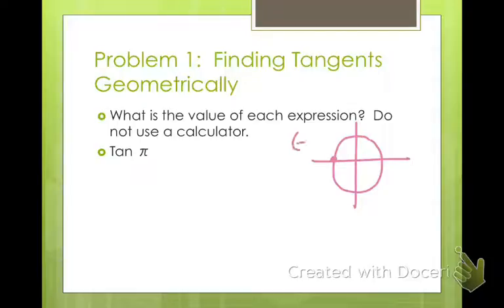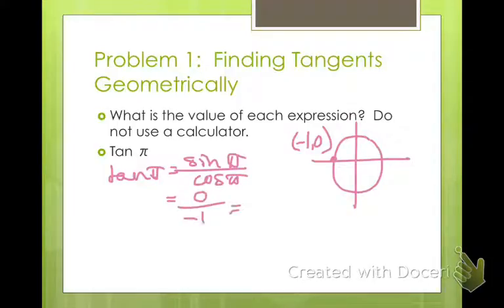π is this point over here. What's this point? Negative 1, 0. So in order to find tangent of π, we take sine of π divided by cosine of π. And sine of π is 0, cosine of π is negative 1. That means tangent of π is 0.